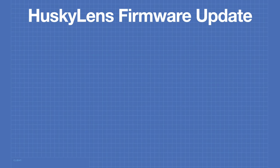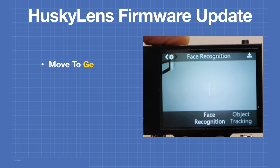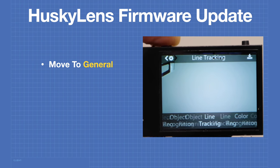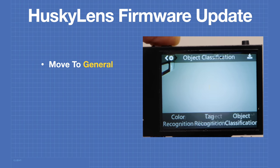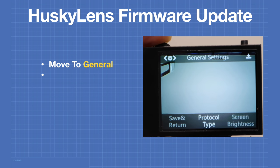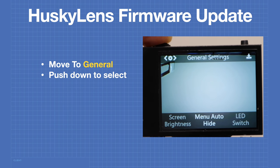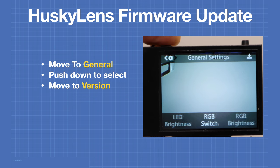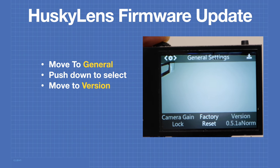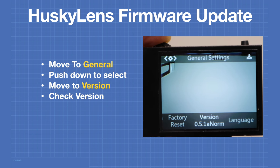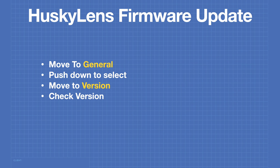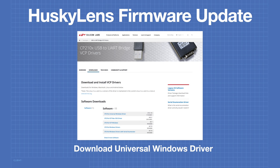Before using the Husky Lens you'll want to check the current firmware version, as you'll likely need to update it. Use the dial to navigate to general settings, press down, then move to version and check the number. If your version is earlier than 0.5.1a you'll need to do a firmware update. Although you can do this under any operating system, it is much easier using Microsoft Windows.